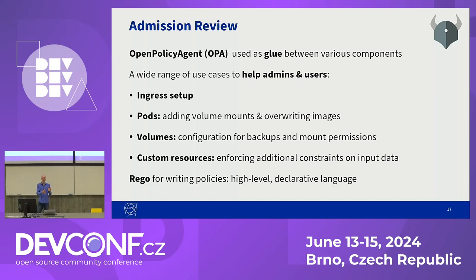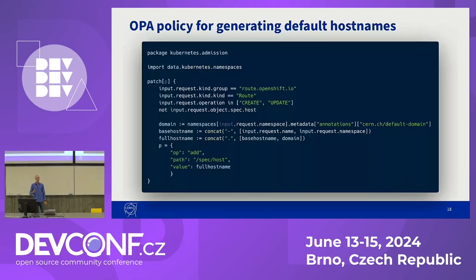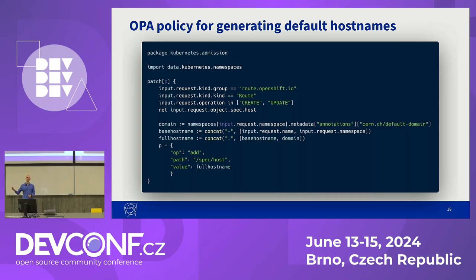Open Policy Agent uses Rego, a declarative policy language, for creating these policies. Basically, it works by inspecting and transforming data in structured documents. The data is twofold: it is the input request, but we can also preload additional data, and we make extensive use of that to provide additional context for the request. This is an example of a Rego policy — in this case, the policy we use for generating default hostnames if the user didn't specify one. We check that the input request is indeed a route object and it has not already a hostname defined. If that is the case, we generate a default name based on the name of the route, the name of the namespace, and the default domain used for that particular project. At the bottom, we send back a JSON patch to the Kubernetes API server, telling it how the input request should be transformed before being persisted into the etcd database.